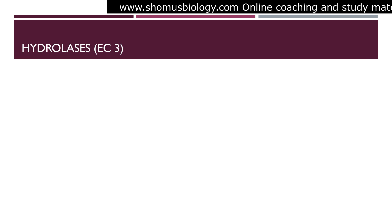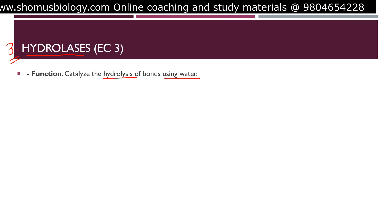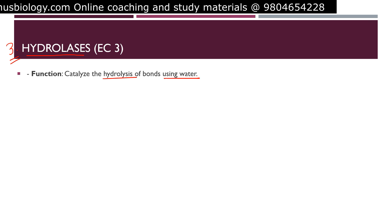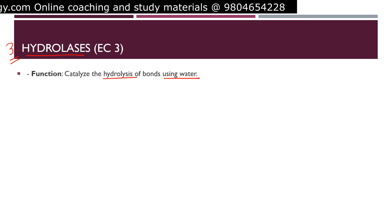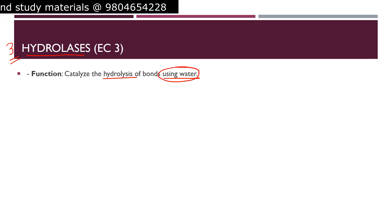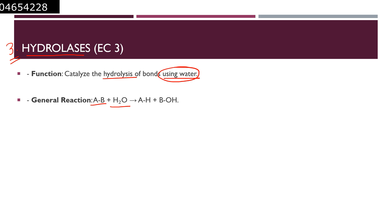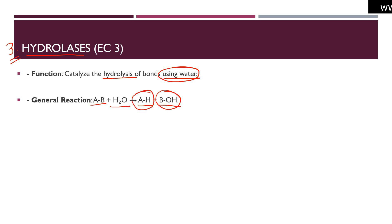Next is EC3, hydrolases. Their function is to catalyze the hydrolysis of bonds using water. These enzymes cleave proteins at peptide bonds and nucleic acid structures. The lysosome is filled with these hydrolytic enzymes, but they require water. The general reaction: A-B connected by a bond is broken using water into A-H and B-OH, because water is incorporated into the products. That is the general reaction of hydrolases.